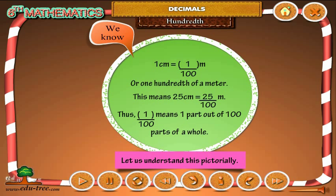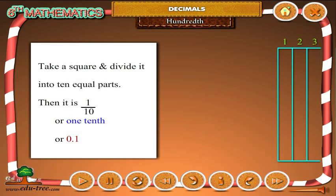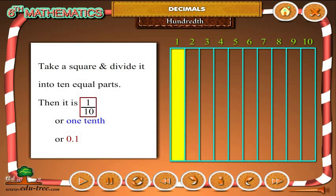Let us understand this pictorially. Take a square and divide it into 10 equal parts. Then it is 1 by 10 or 1 tenth or 0.1.